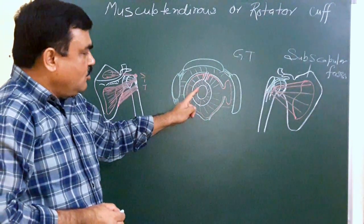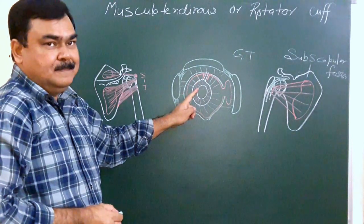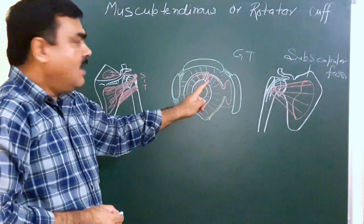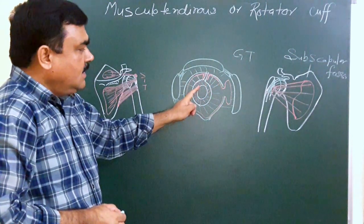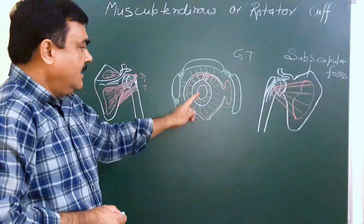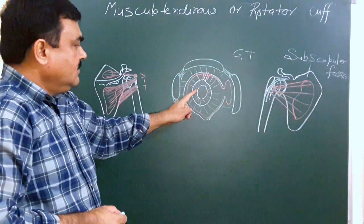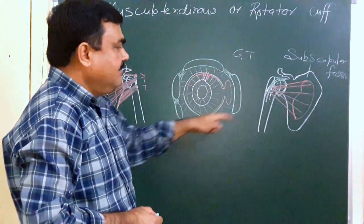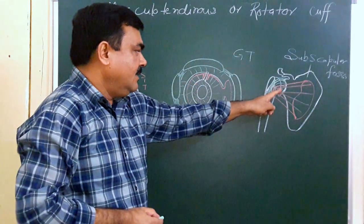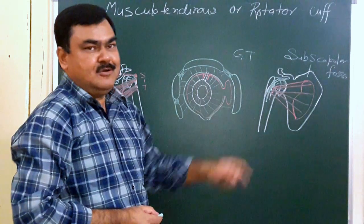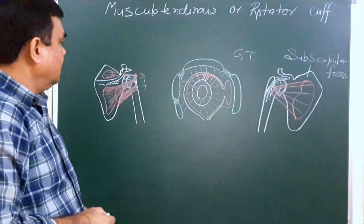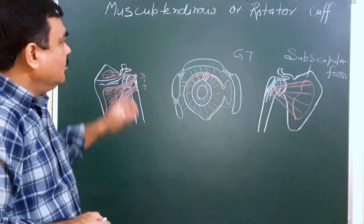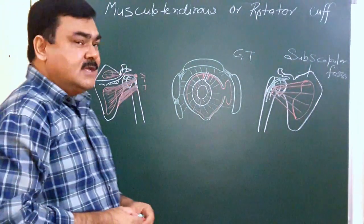So in the inferior aspect, this region is weak. That is all about the musculotendinous cuff of the shoulder joint.